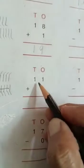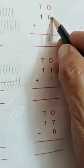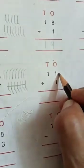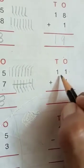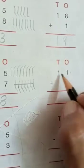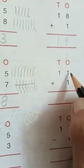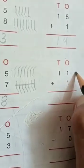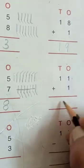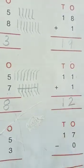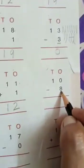Now next: 11 plus 1. Again, if we have to add 1 to any number, we go to the next number. 11 — what is the next number of 11? The answer is 12.